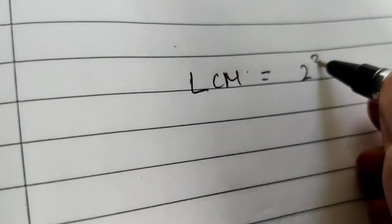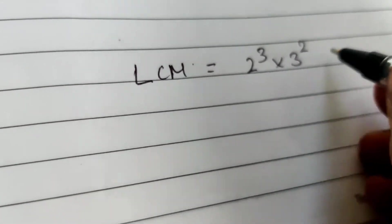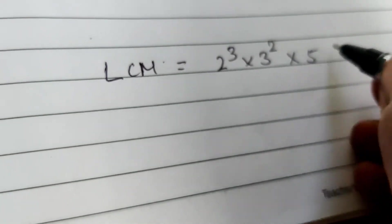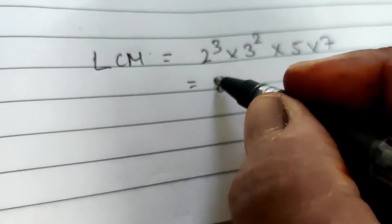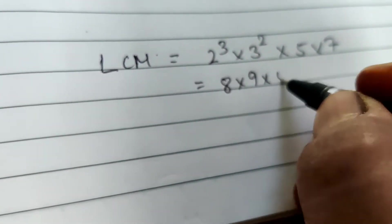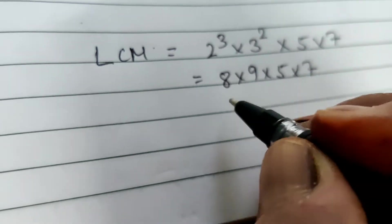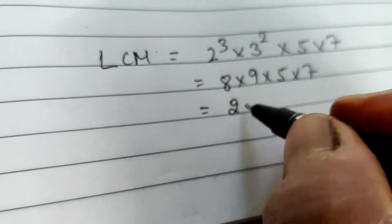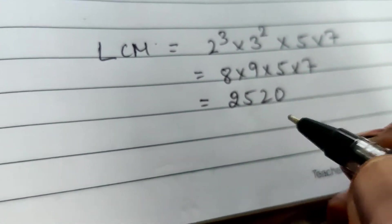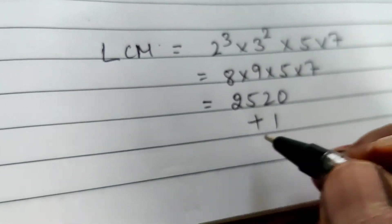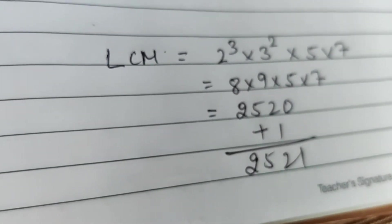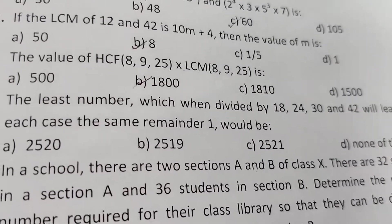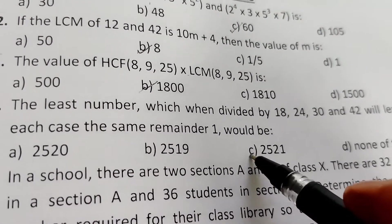The highest power of 2 is 3, of 3 is 2, and we also have prime factors 5 and 7. So LCM = 2³ × 3² × 5 × 7 = 8 × 9 × 5 × 7 = 2520. Since we need remainder 1, we add 1, giving the answer 2521.